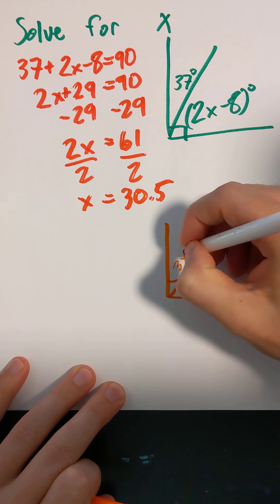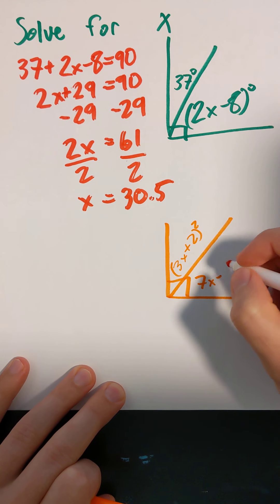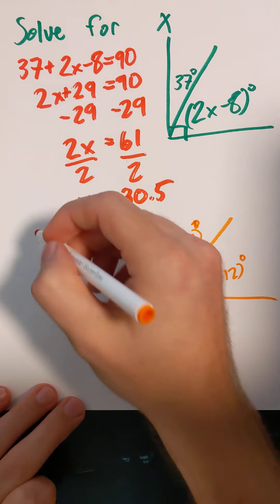This one's going to be 3X plus 2 degrees, and this one's going to be 7X minus 12 degrees. And I asked you to solve for X.